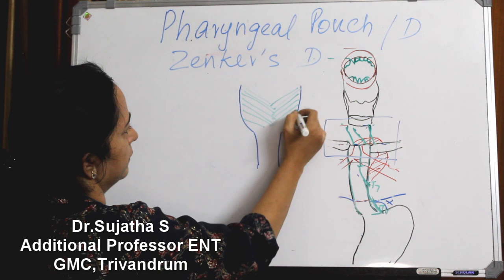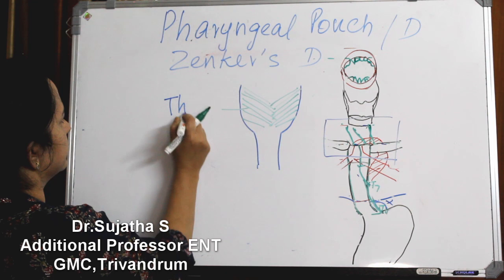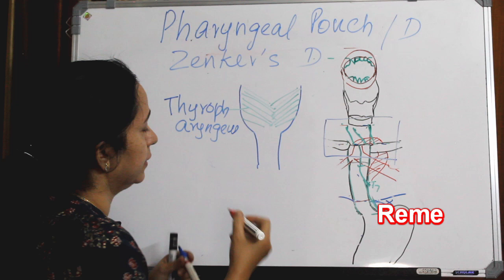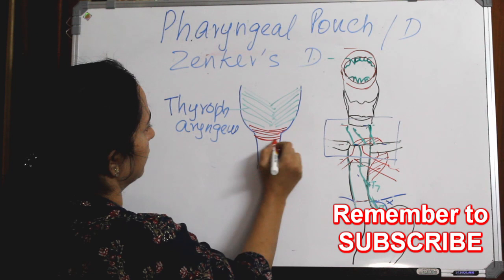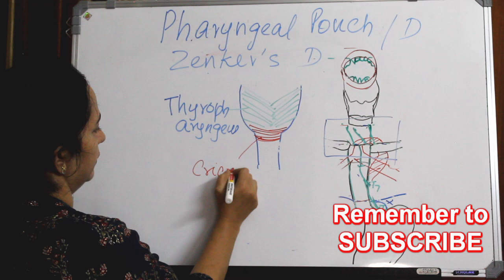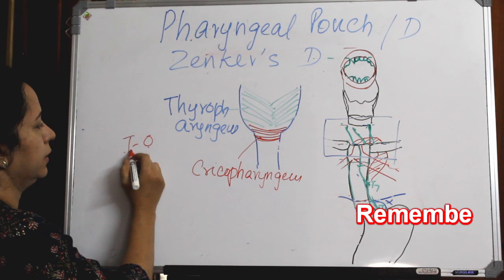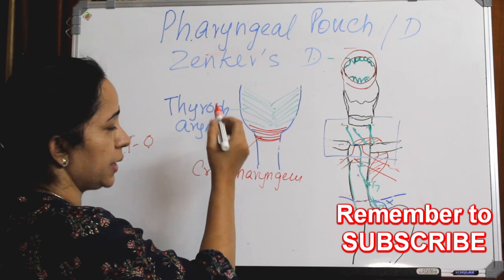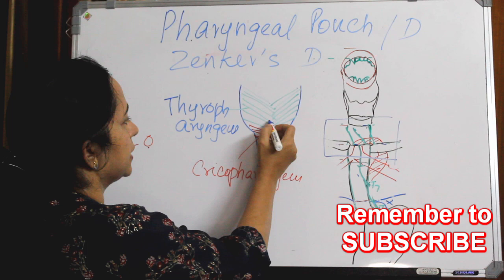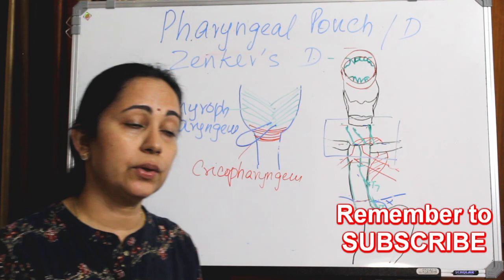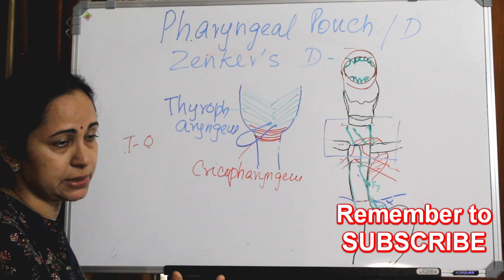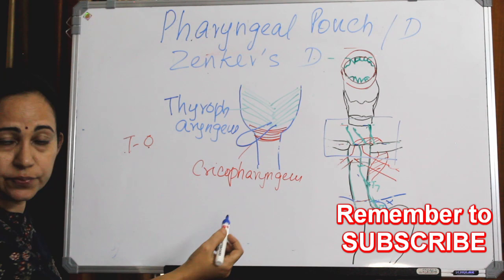The thyropharyngeus has oblique fibers, and the cricopharyngeus has more horizontal fibers - see, they are going like this. So in between them there is an area of weakness. A diverticulum is an outpouching from a tubular structure. From this tubular structure of the esophagus, between the thyropharyngeus and the cricopharyngeus fibers of the inferior constrictor, there is Killian's triangle, which is the weakest area.